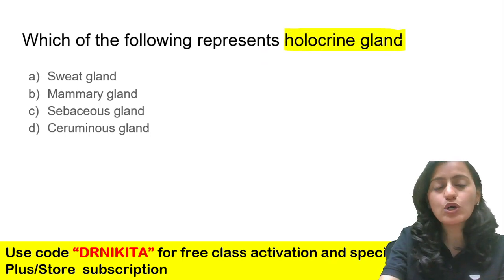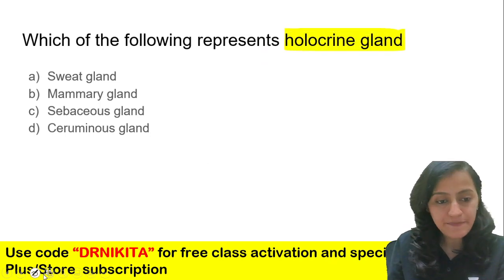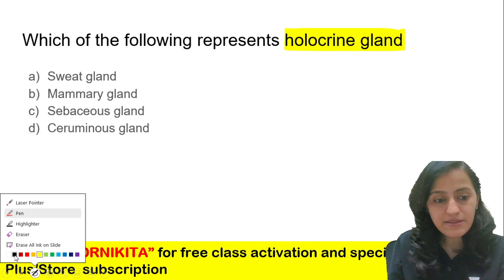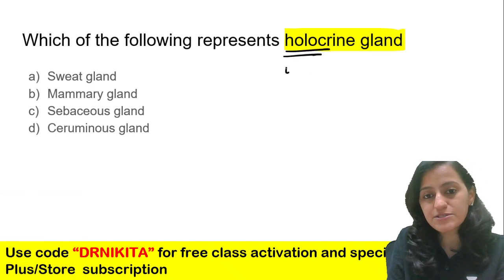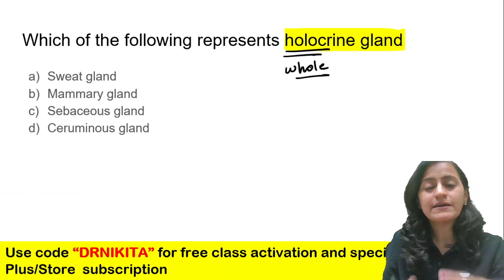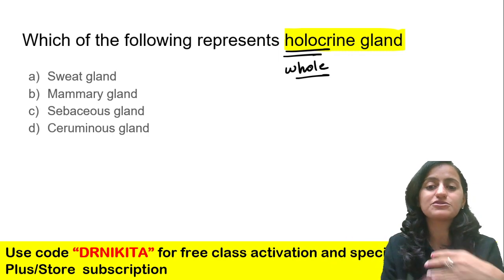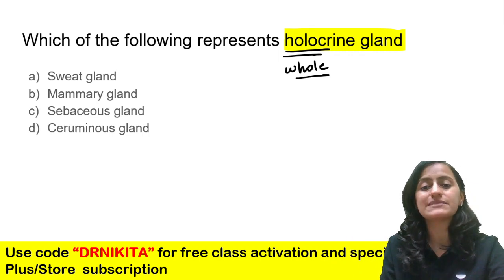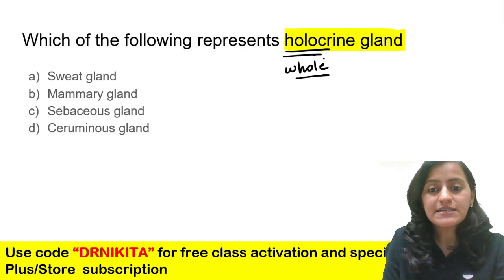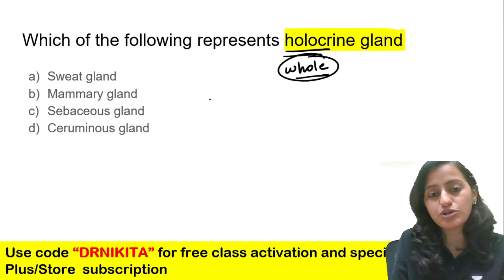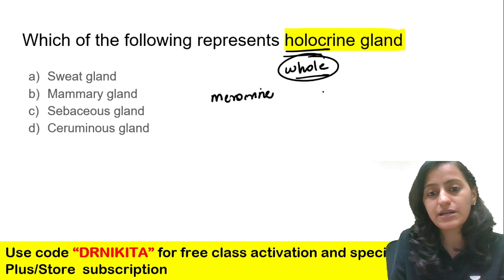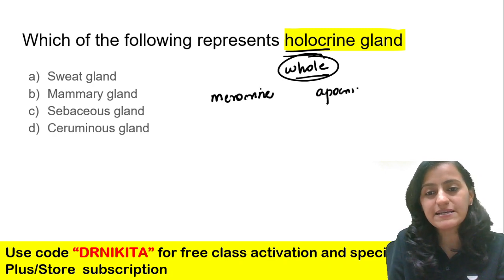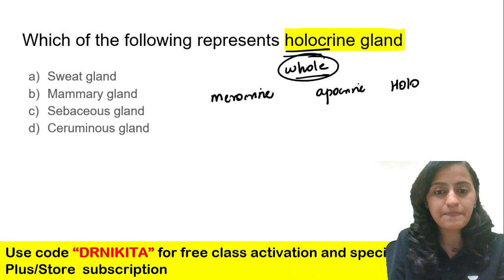What is a holocrine gland? Remember that holocrine — as the term says, holo means whole — means the whole cell gets destroyed during secretion. The types of glands we have are the merocrine gland, the apocrine gland, and the holocrine gland.